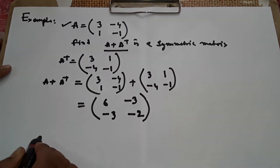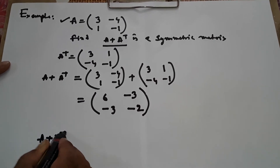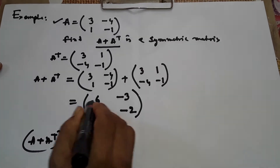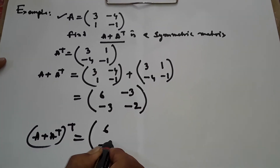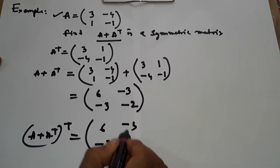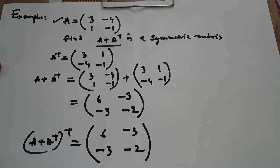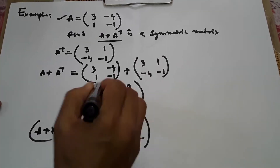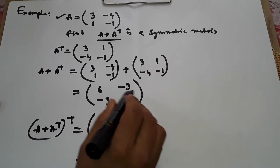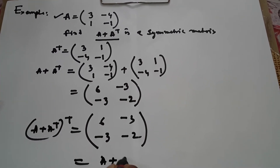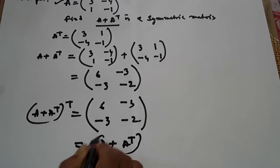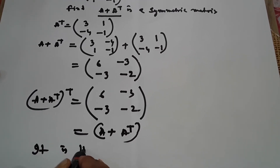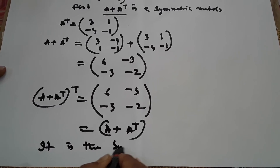Now I find the transpose of A plus A transpose, whole to the power transpose. The rows change into columns. This is the original matrix of A plus A transpose — which is the same. Therefore A plus A transpose is a symmetric matrix.